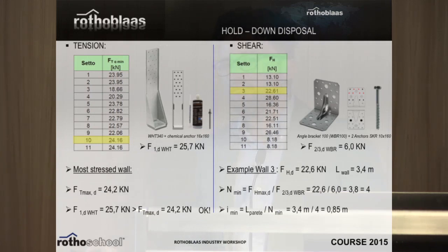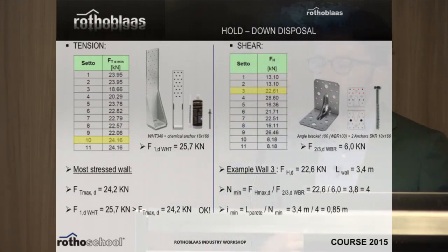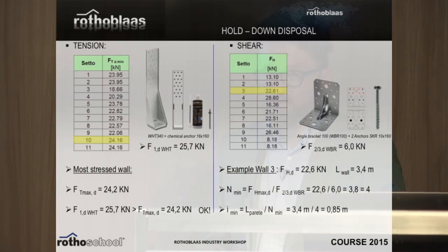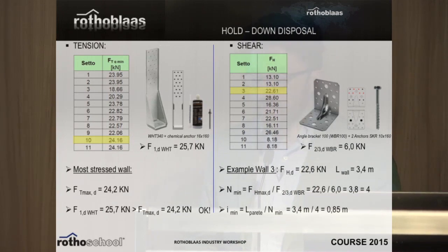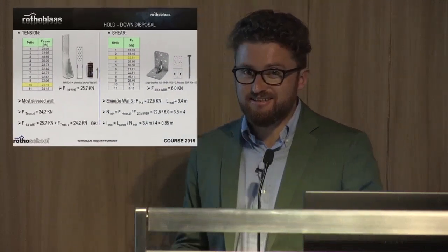A question about one bolt on the anchor. Well, this is one of the principles inside the DIN regulation — the German approach — which was really the first and best code we had on timber. Unfortunately it is the old allowable stress method, not the characteristic approach, but it was the easiest and most used code in the past. One of its principles says: one bolt is no bolt in timber. You always need at least two bolts.